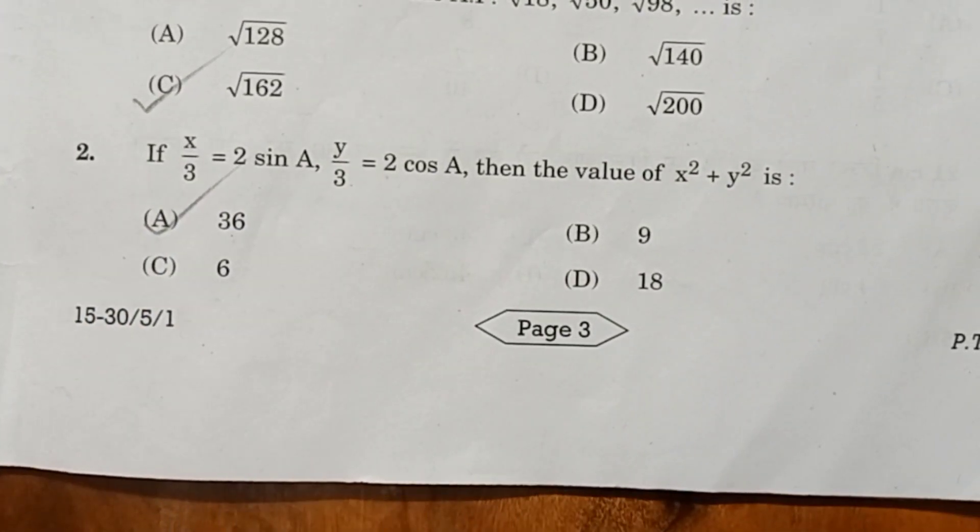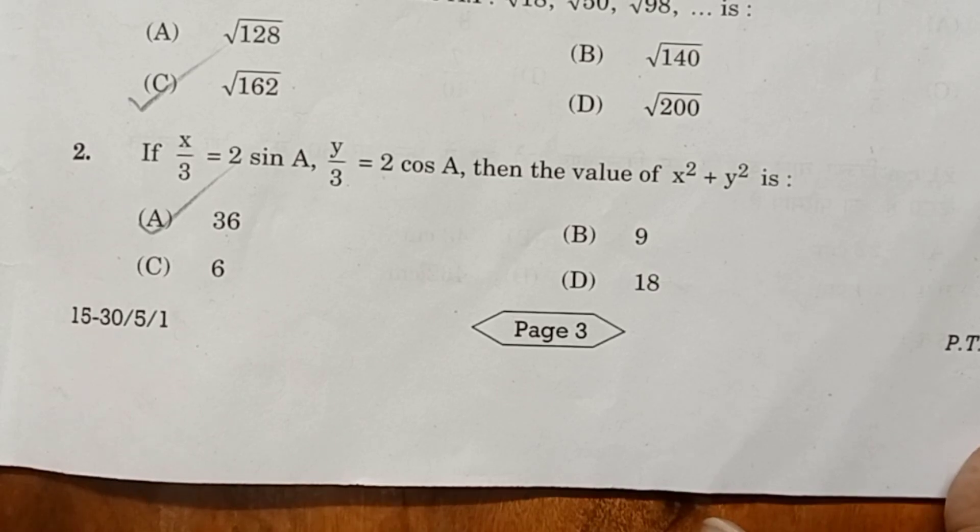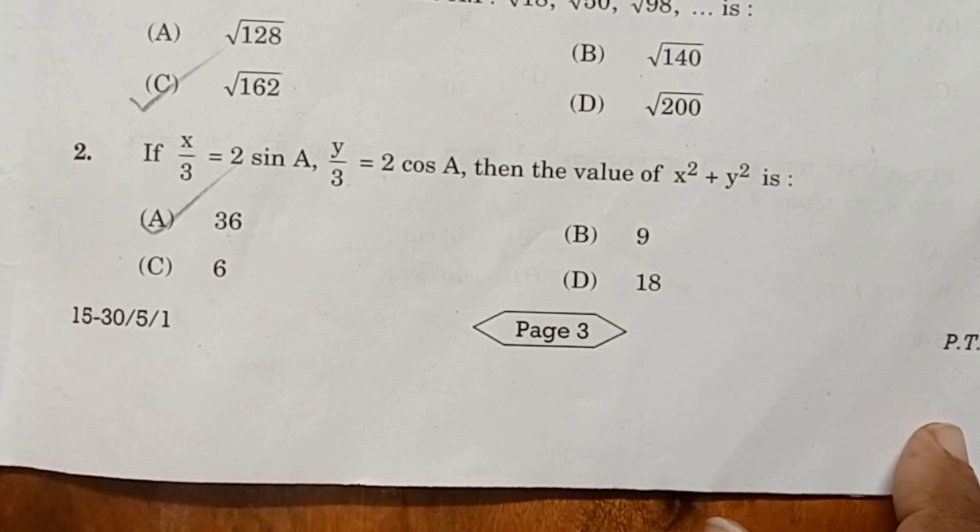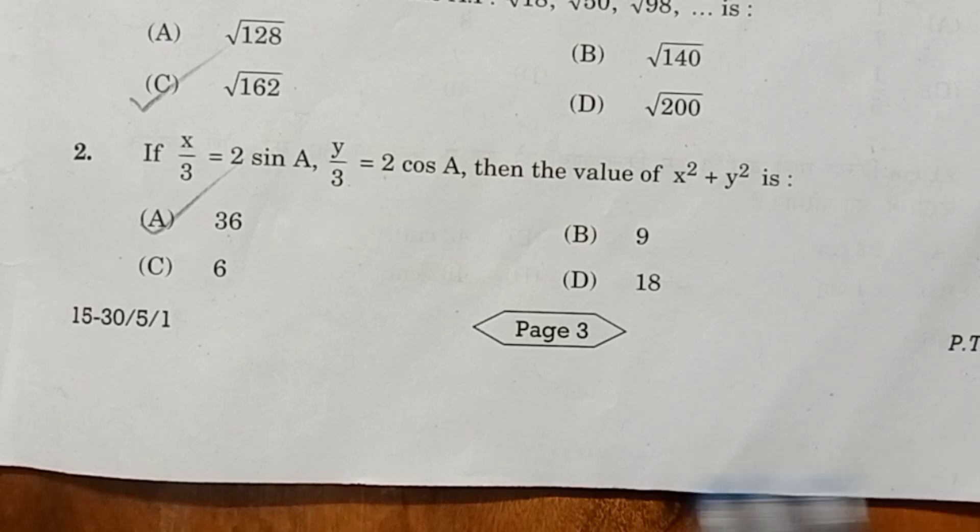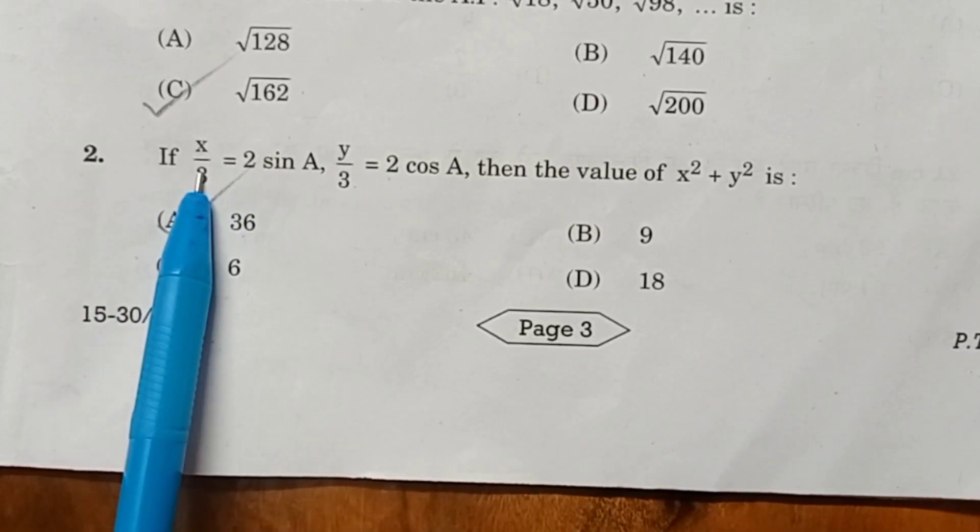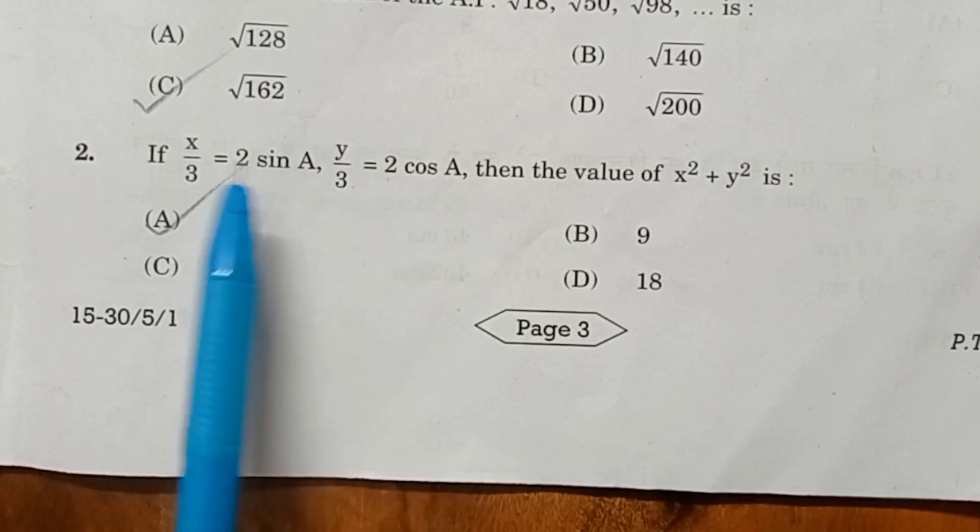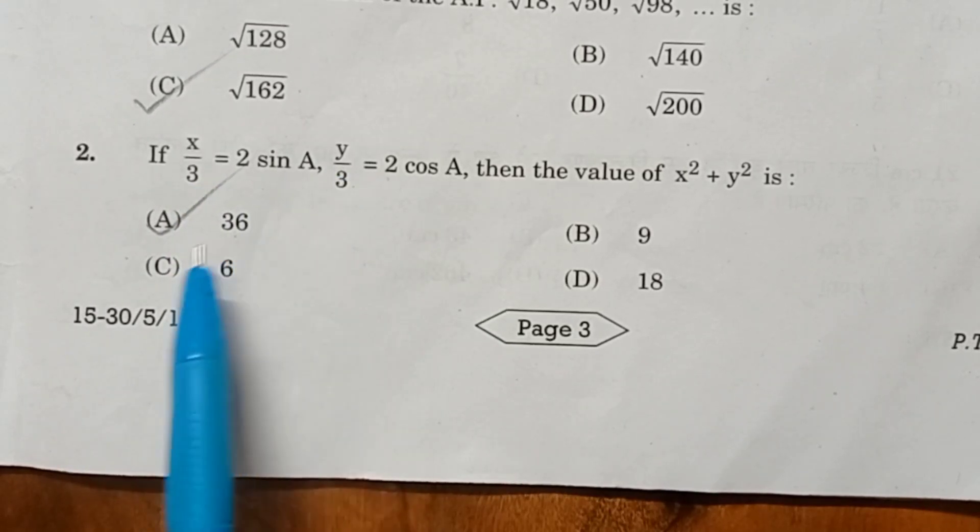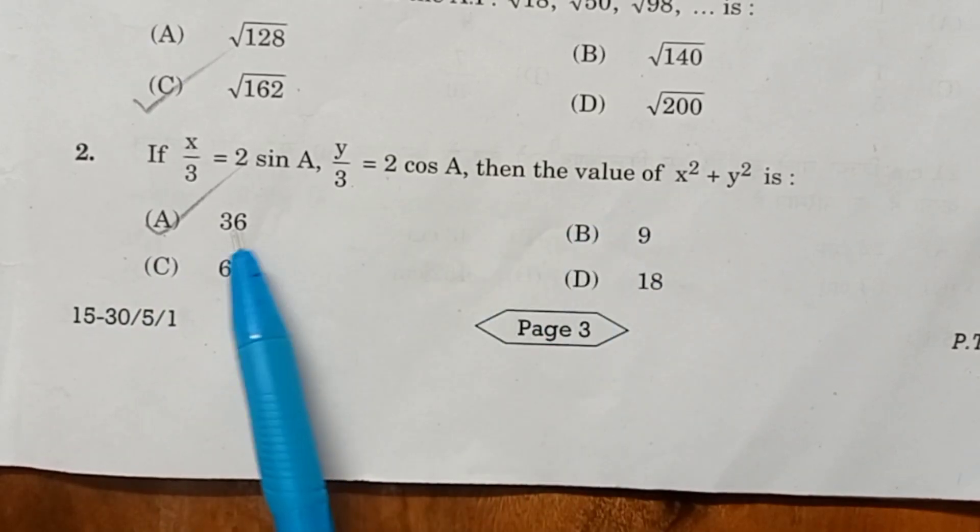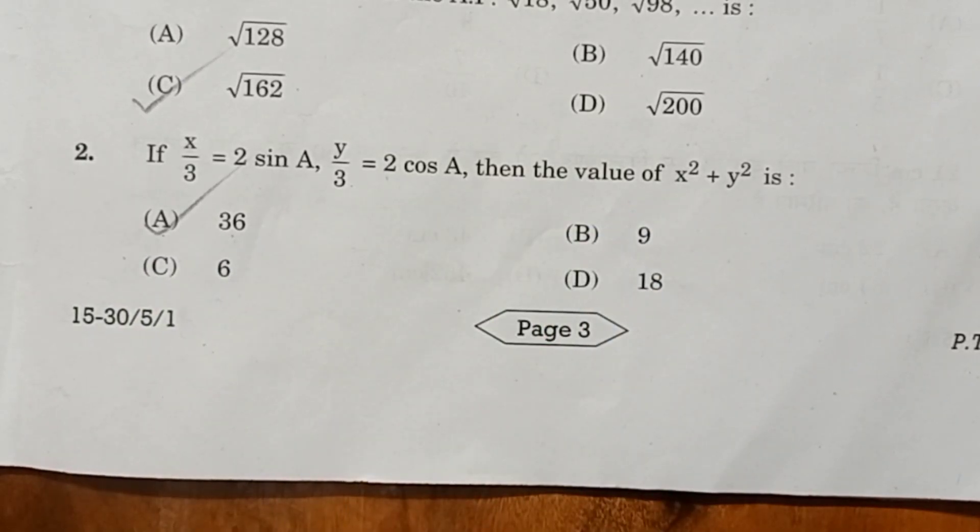Second question. If X by 3 is equal to 2 sin A, Y by 3 is equal to 2 cos A, then the value of X squared plus Y squared is. From the first, find the value of X and the second, find the value of Y. Squaring X squared, squaring Y squared, then we will get the value of X squared plus Y squared is equal to 36.